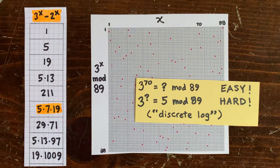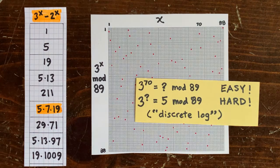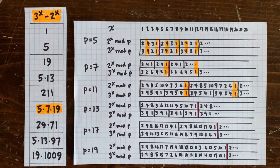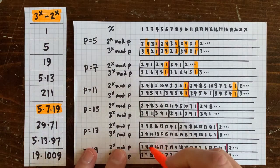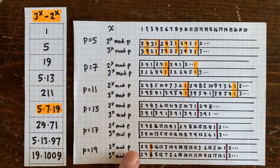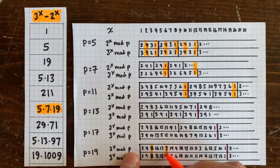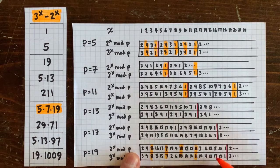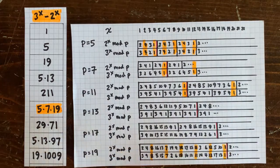This expression is divisible by p whenever these numbers agree — here and here and here. This is why 19 shows up so often as a factor of this expression. So clock math is crazy, and see you next time.